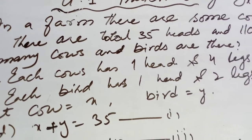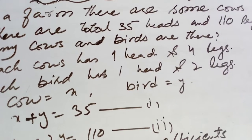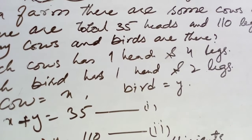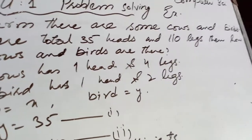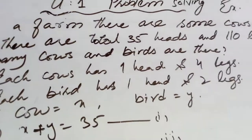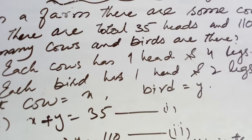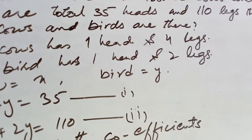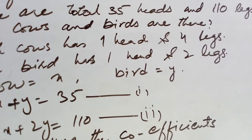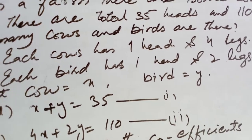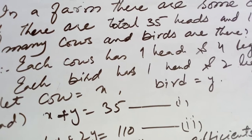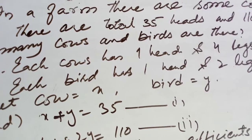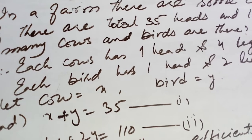In a farm there are some birds and some cows. How many total heads? We have been told 35 heads. And how many total legs? 110. Now we have to find out how many cows and how many birds there are.